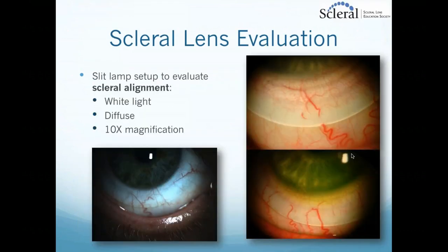For scleral alignment, we want a nice soft even landing of the haptic or scleral portion of the lens. Using diffuse white light at about 10x magnification gives a global view to look for areas of blanching or edge lift. The two photos on the right show blood vasculature being cut off — the top showing significant blanching, the bottom showing more subtle fine vessel blanching — while the bottom-left photo shows nice soft even alignment where blood vessels are not being cut off by the edge of the lens.